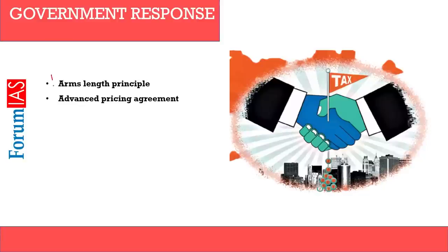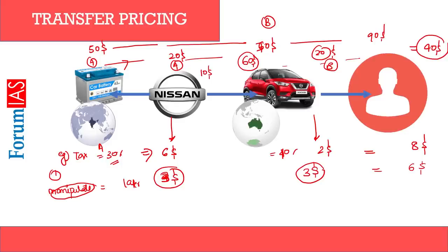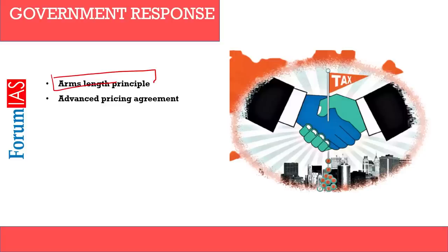This brings us to the Arms Length Principle. What do we do with the Arms Length Principle? Basically, it says that when two entities are related and transfer goods and services, the pricing mechanism should be as if they are not related. The unrelated case price was $70. So the country says: they should transfer goods and services quoting prices as if they are not related. In the related case, the price was misquoted — profit was underestimated, resulting in less tax. The Arms Length Principle prevents this.